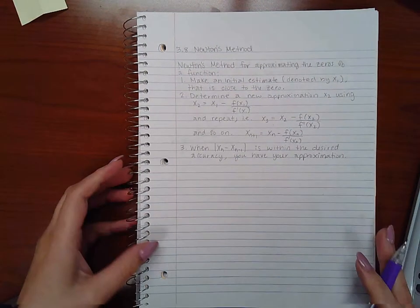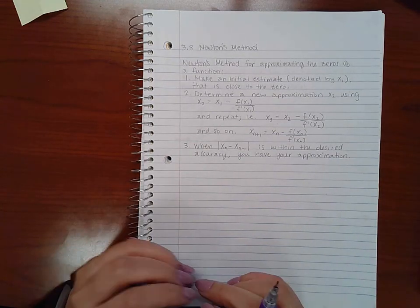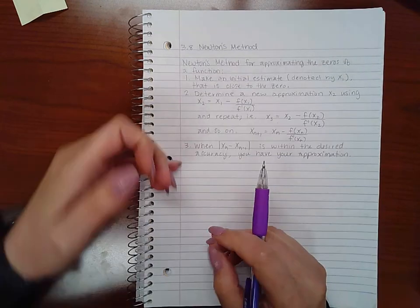This video is going to cover Newton's method. Newton's method for approximating the zeros of a function, basically the x-intercepts of a function, is to follow these three steps.